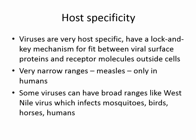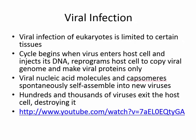Viruses are very host-specific. They have a lock-and-key mechanism for fit between viral surface proteins and receptor molecules on the outside of cells. They can have very narrow ranges — for instance, measles can only infect humans — but some have broad ranges, like West Nile virus, which infects mosquitoes, birds, horses, and humans. The infection cycle begins when the virus enters the host cell, injects its DNA, and reprograms the cell to copy the viral genome and make only viral proteins. Viral nucleic acid molecules and capsomers spontaneously self-assemble into new viruses.